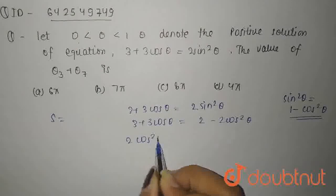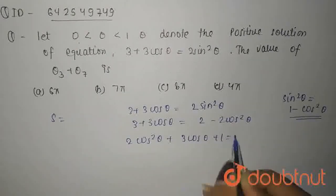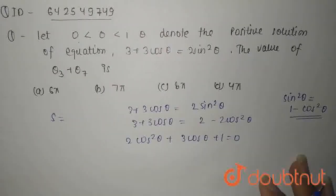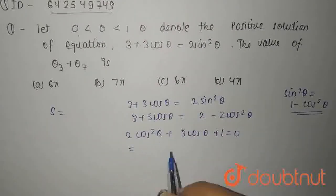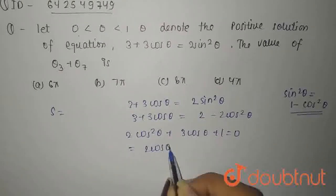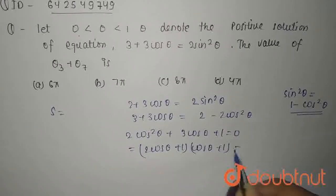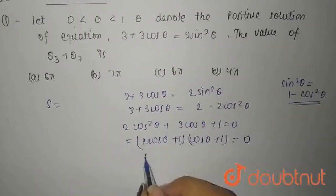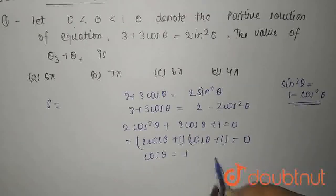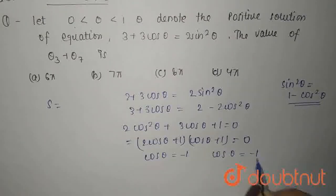So, 2 cos squared theta plus 3 cos theta plus 1 equals 0. 3 minus 2 is 1. Taking common cos theta, you're left with 2 cos theta plus 1 and cos theta plus 1, which by factorizing equals 0. So, cos theta equals minus 1 and cos theta equals minus 1 by 2.